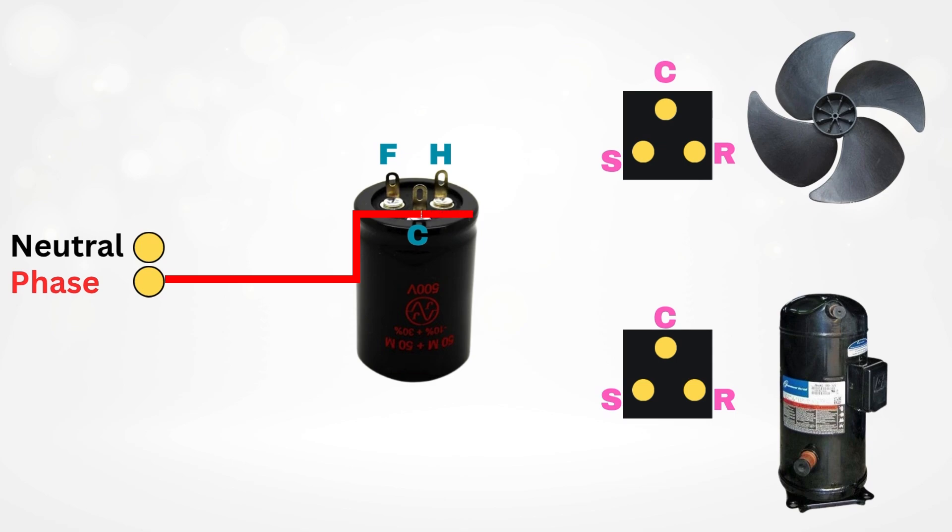Next, from the common C terminal you run two wires. One goes to the running terminal of the compressor. The other goes to the running terminal of the fan motor.